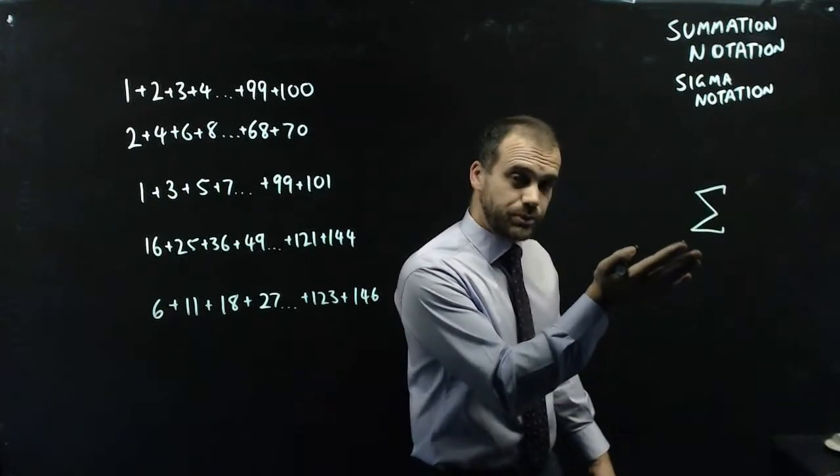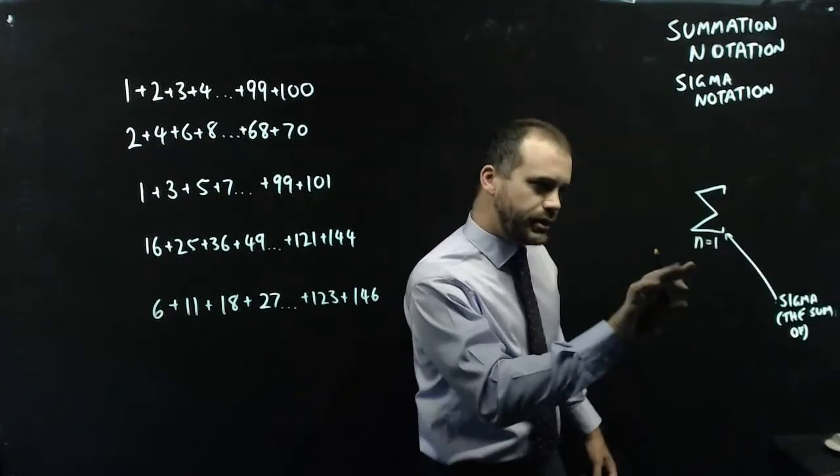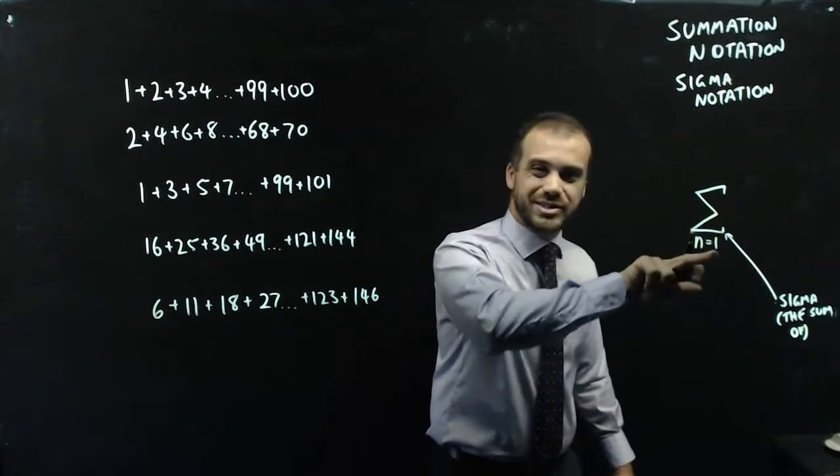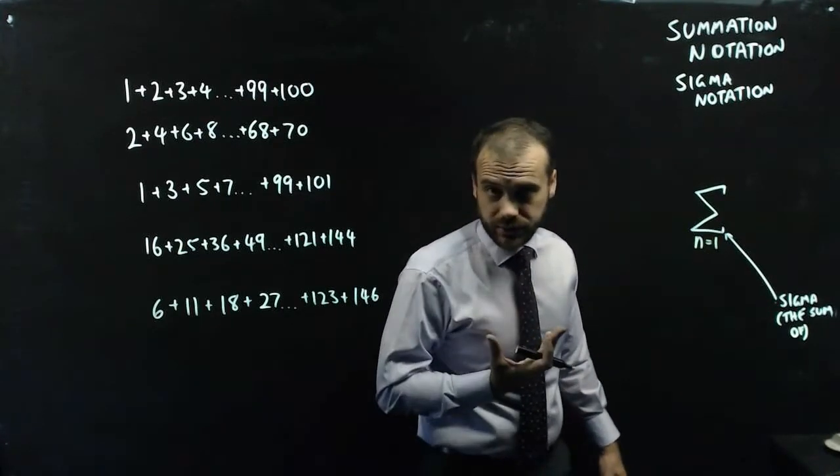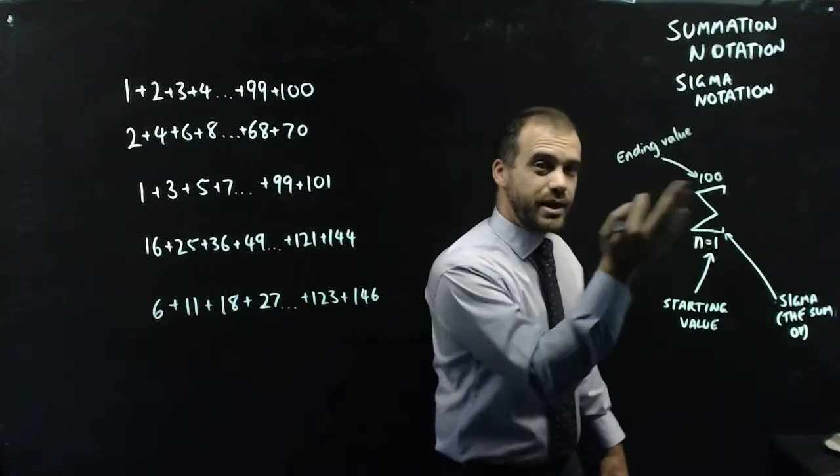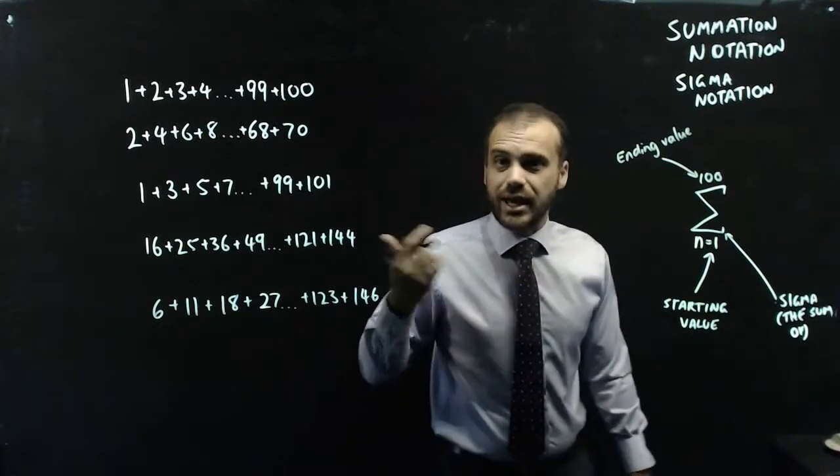We start here with sigma, which means the sum of. Underneath sigma, we put our starting value. So n equals 1 means we start at the number 1. On top here, we put our ending value, the value that we're going to end on.